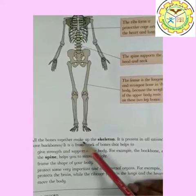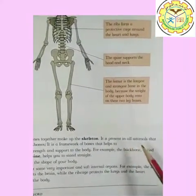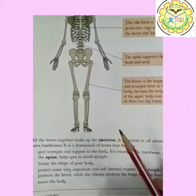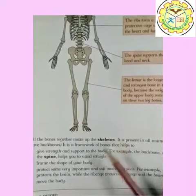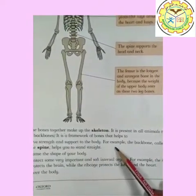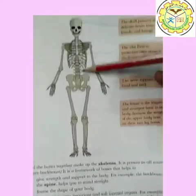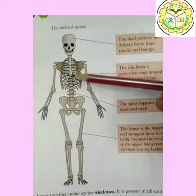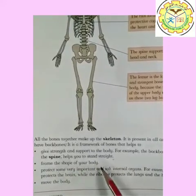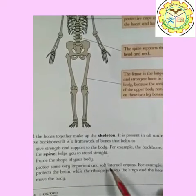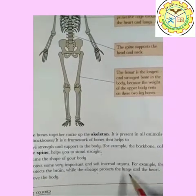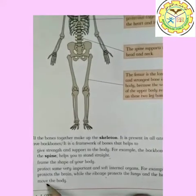All the bones together make up the skeleton. It is present in all animals that have a backbone. Skeleton is present in all vertebrates, and vertebrates are those which have a backbone. Its functions are: first, give strength and support to the body — for example, the backbone called the spine helps you to stand upright. Second, frame the shape of your body. Third, protect some very important and soft internal organs — for example, the skull protects the brain while the rib cage protects the lungs and the heart. And fourth, move the body.